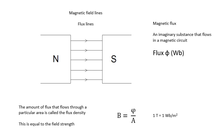We can imagine some kind of stuff flowing from north to south, and this stuff flowing in that direction is called flux. It's an imaginary substance, but a very useful idea, as we shall see. It has this Greek symbol phi, and flux phi is measured in Webers, Wb.